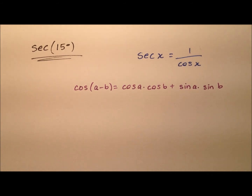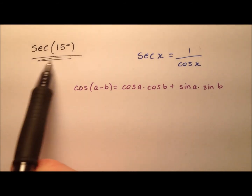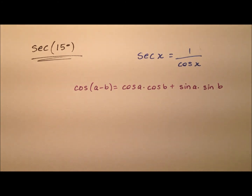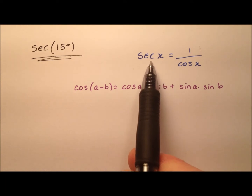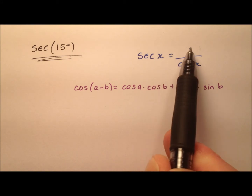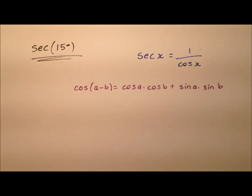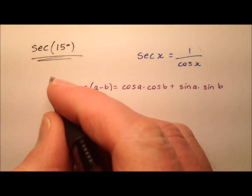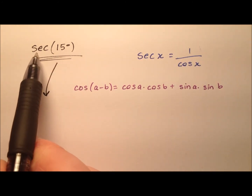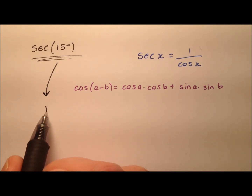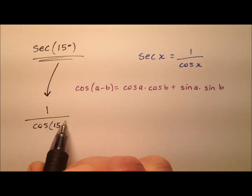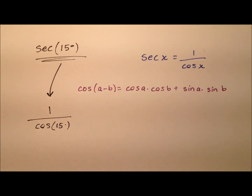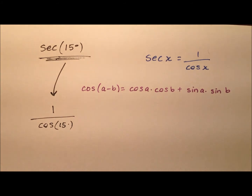In this video, we're going to work through finding the exact value for the secant of 15 degrees. We know that secant is a reciprocal function with cosine, because the secant of x equals 1 over the cosine of x. So we're going to use this relationship — in order to find the exact value for the secant of 15 degrees, we'll look for 1 over the cosine of 15 degrees, and that will give us the value for the secant of 15 degrees.